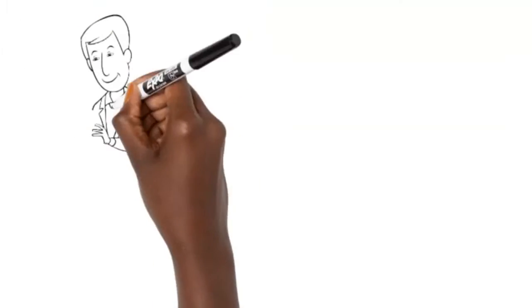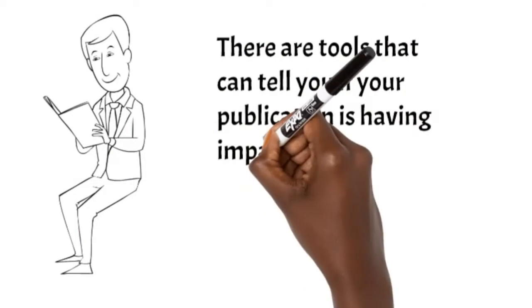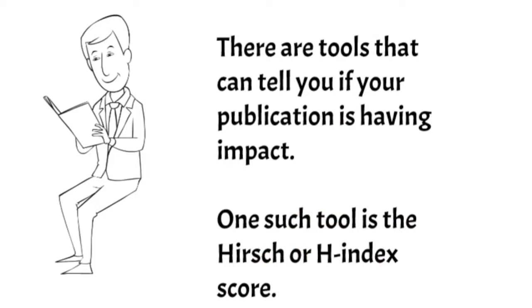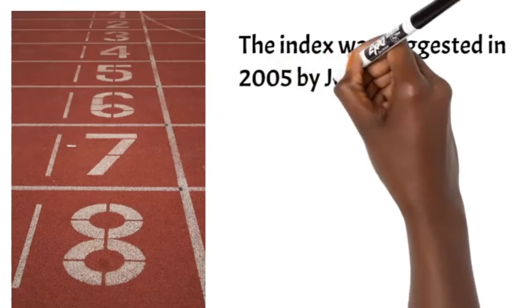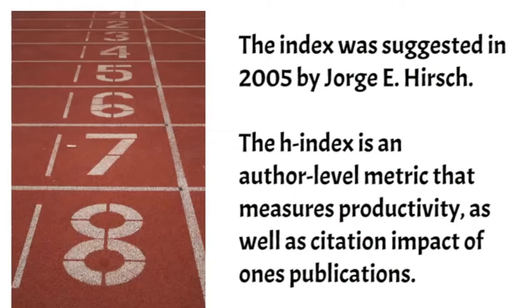There are tools that can tell you if your publication is having an impact. One such tool is the Hirsch or H-Index. The index was suggested in 2005 by Jorge Eduardo Hirsch. The H-Index is an author-level metric that measures productivity as well as citation impact of one's publications.